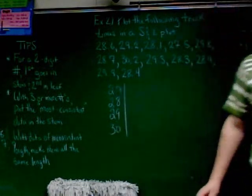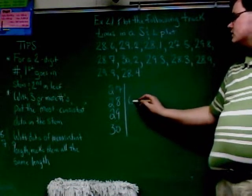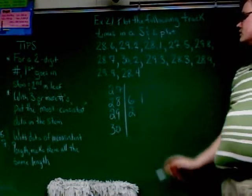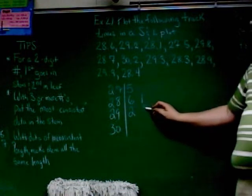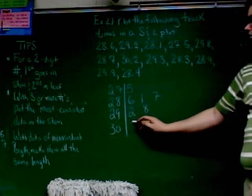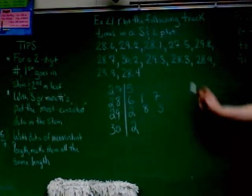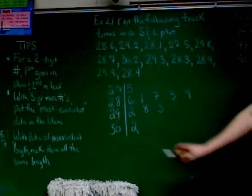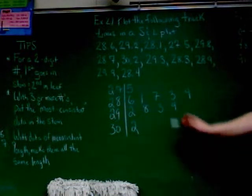It doesn't say anything about ordered, so we can go right into making the stem and leaf plot. I've got 28.6 — next to the 28 goes a 6. 29.2 — next to the 29 goes a 2. 28.1 — next to the 28 goes a 1. 27.5 — next to the 27 goes a 5. 29.8 — next to the 29 goes an 8. 28.7 — next to the 28 goes a 7. 30.2 — next to the 30 goes a 2. 29.3 — next to the 29 goes a 3. 28.3 — next to the 28 goes a 3. 28.9 — next to the 28 goes a 9. 29.9 — next to the 29 goes a 9. 28.4 — next to the 28 goes a 4.